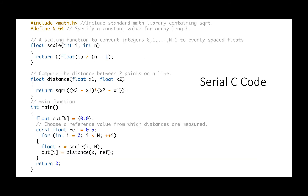These slides present a simple serial C code to perform the scale and distance operation. The code has a single loop that scales the loop index to create an input location and then computes and stores the distance from the reference location.